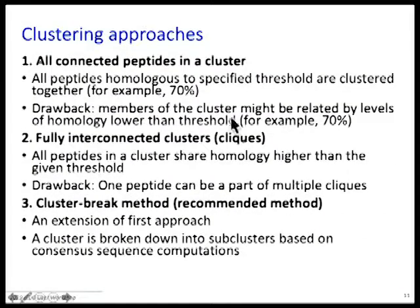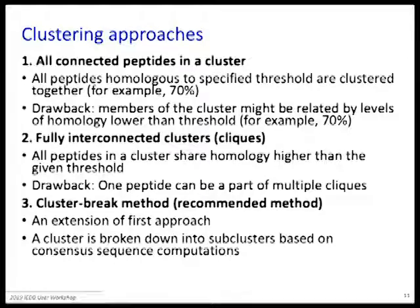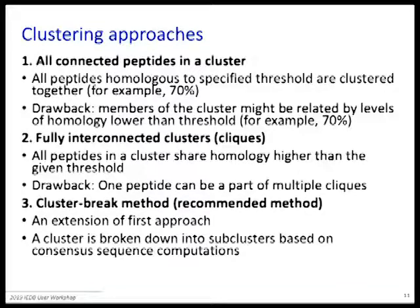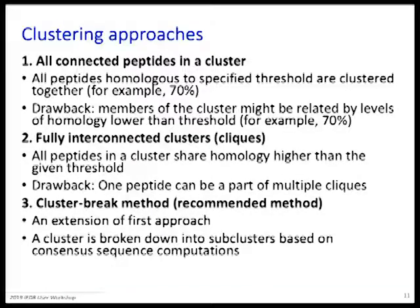The first clustering approach is all-connected peptides in a cluster. You say: I want to group all peptides with 70% homology. The drawback is this connects all peptides transitively. In the case of overlapping 15-mers overlapping by 12, spanning a thousand residues of a protein, it would become a single gigantic cluster — because epitope 1 overlapping 12 amino acids with epitope 2 puts them in a cluster, and walking down the chain you end up with peptides in the same cluster that have absolutely no homology to each other.